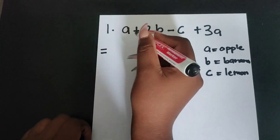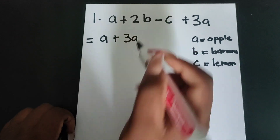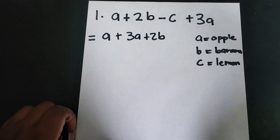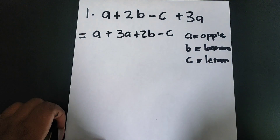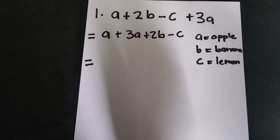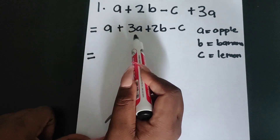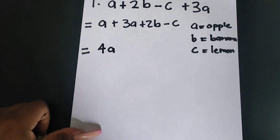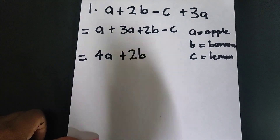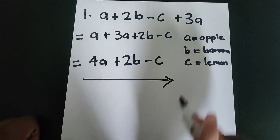So we first start off with a — our apple — plus our other apple, which is 3a. And then now we're collecting our bananas: plus 2b. Is there another banana? There's no other banana. So now we have our lemon, which is our c. Now we have to add or subtract apples from apples, bananas from bananas, and lemons from lemons. So we have one apple plus three apples — that gives us four apples. We just have two bananas, so we bring that down as two bananas. And then we check our lemons: we just have negative one lemon, no other lemon, so we just bring that down. So that is your answer on that one.